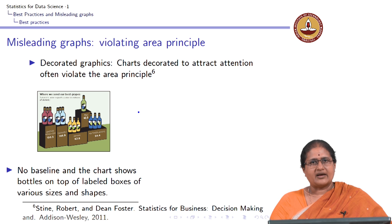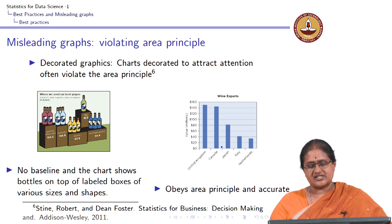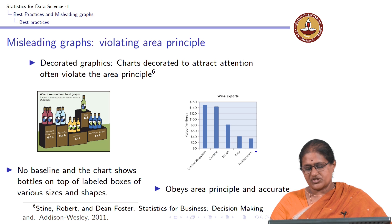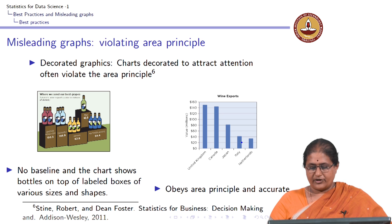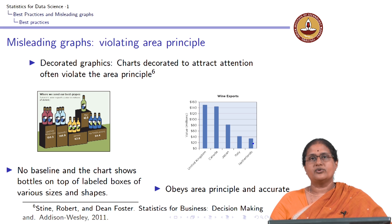I can construct this using a bar chart, where my categories are United Kingdom, Canada, Japan, Italy, and Netherlands. I have labeled each one of my categories. I can see that United Kingdom has a value of 150.3 million dollars, Canada is about 146.8 million dollars, 82.8 to Japan, 42.5 to Italy, and 34.4 to Netherlands.